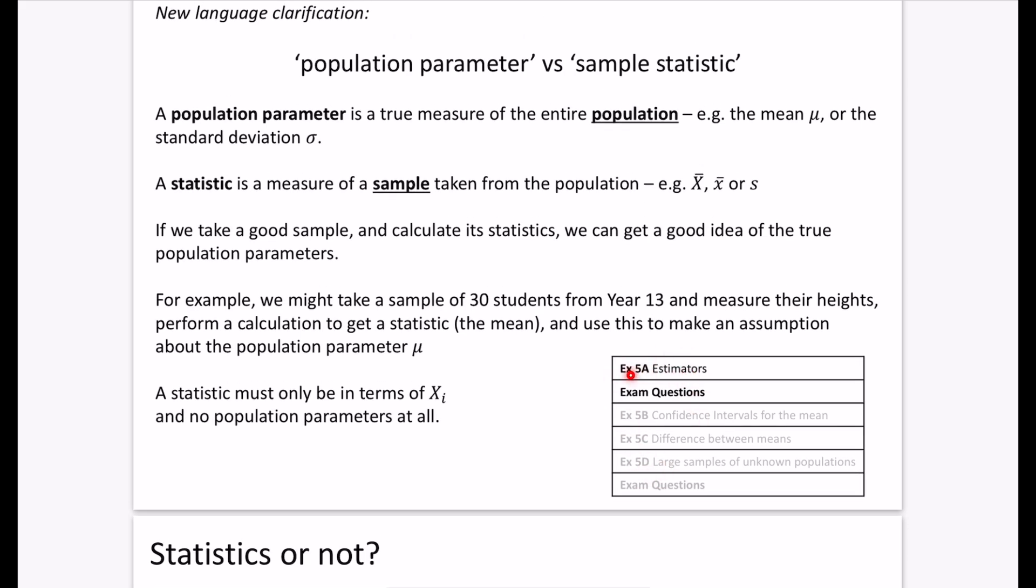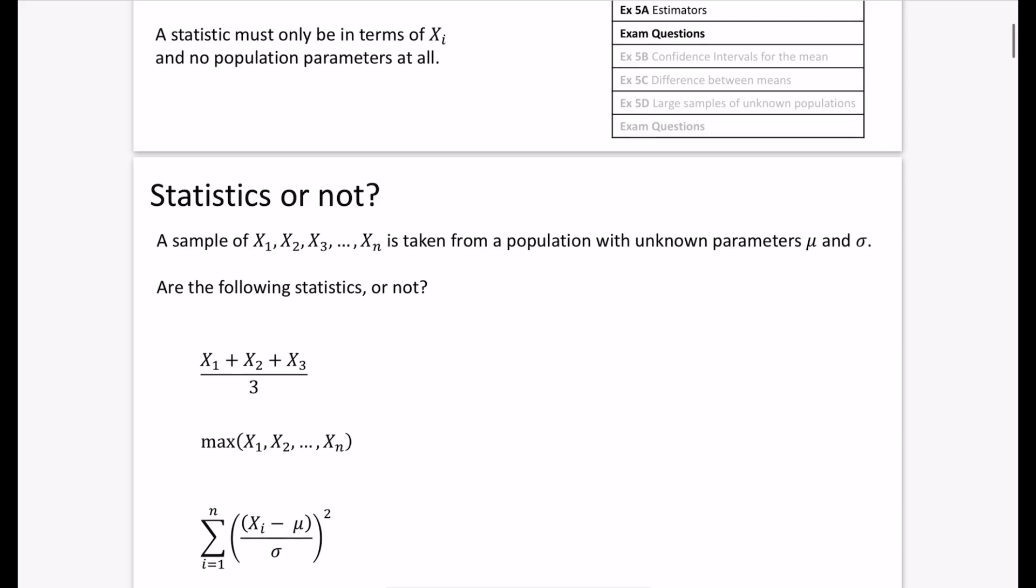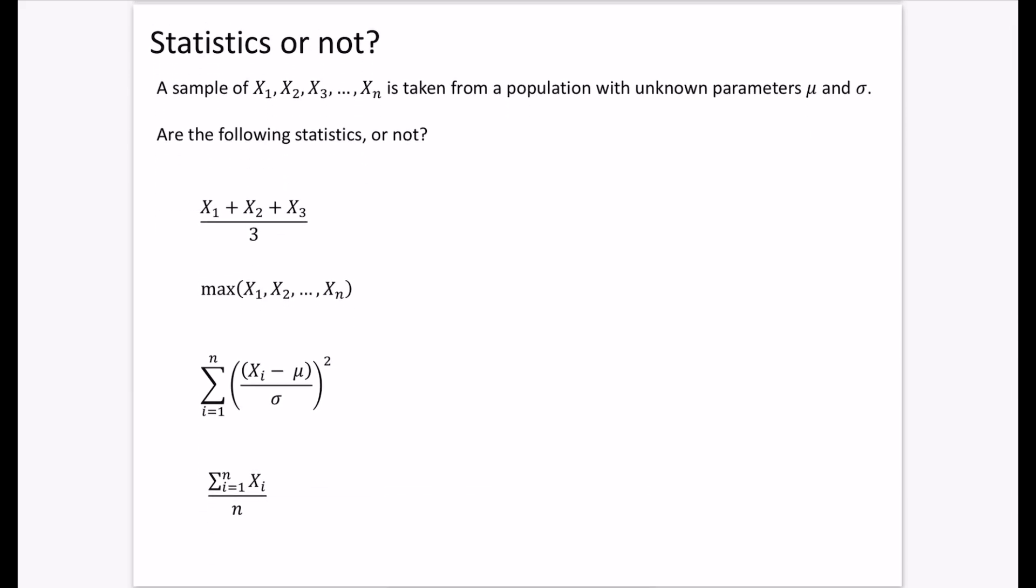Let's look at examples and decide whether they are statistics or not. We have a sample of x₁, x₂, x₃, all the way to xₙ - n observations taken from a population with unknown parameters μ and σ. The first example is (x₁ + x₂ + x₃)/3. There are no population parameters, so yes, this is a statistic. It's the average of the first three things from the sample. The maximum of all observations is also a statistic - the tallest person in Year 13.